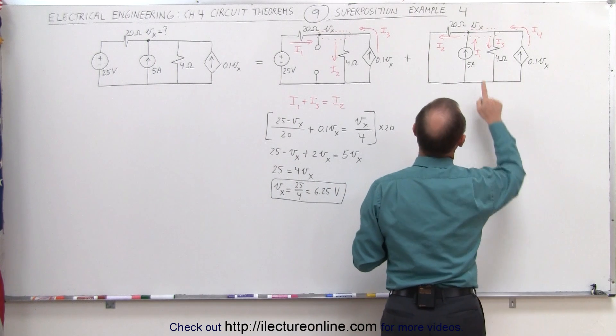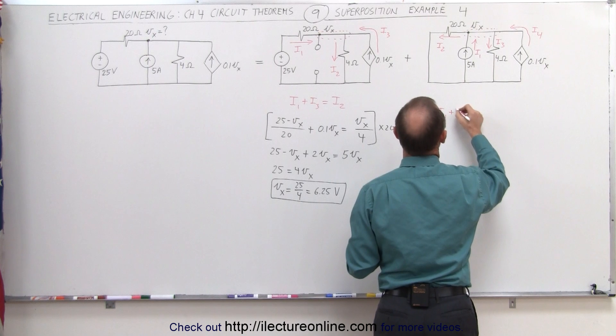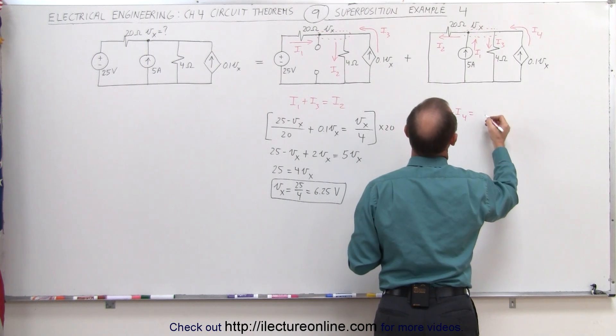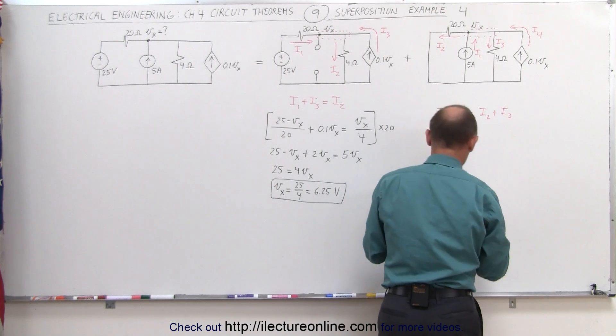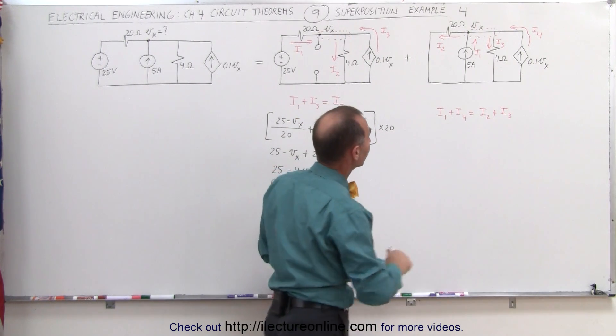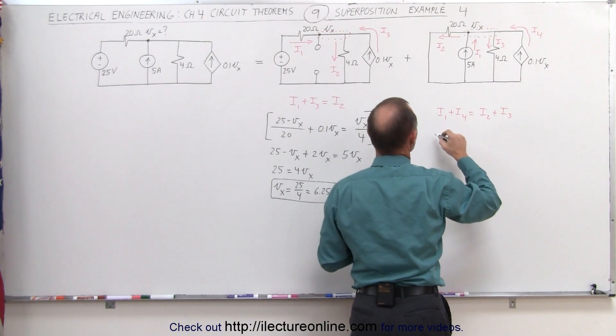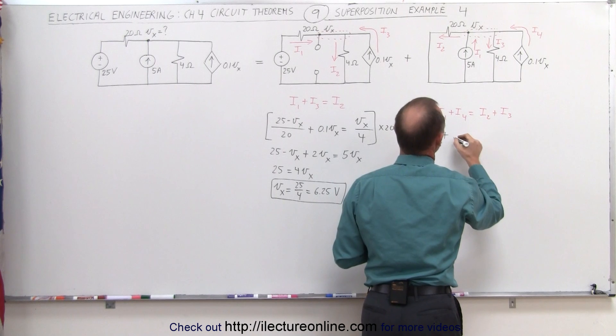All the currents entering would be I1 and I4. I1 plus I4 equals all the current leaving I2 plus I3. Now we need to figure out what each of those are. I1, that's easy, that's 5 amps, plus I4 is also easy.